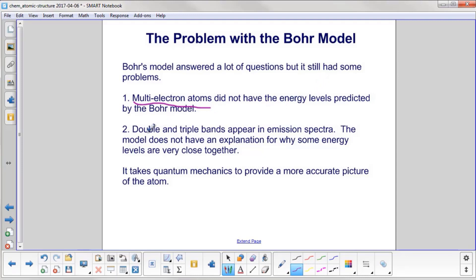Also, you would get double and triple bands in the emission spectrum. The model does not have an explanation for why some energy levels are very close together. They should all be far apart,